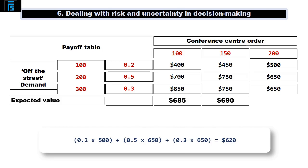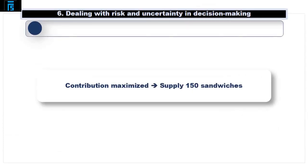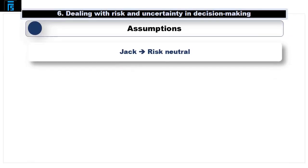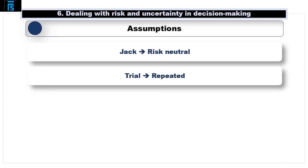On average, Jack's contribution will be maximised if he signs up to supply 150 sandwiches to the conference centre. This conclusion needs careful thought, though, because it assumes Jack is risk-neutral. It also assumes the trial is repeated. You'll note that $690 is not an actual outcome, but will be the average over repeated trials.